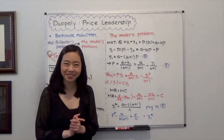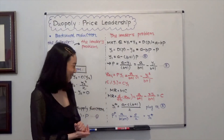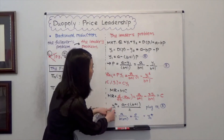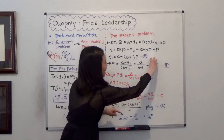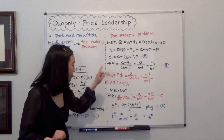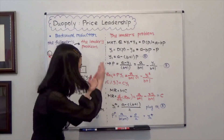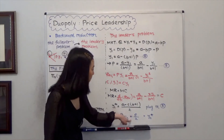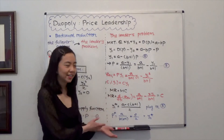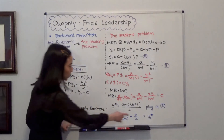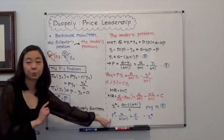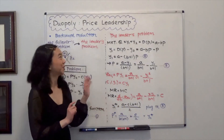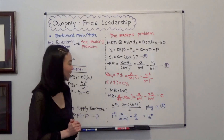To find the optimal price, plug y1* back into Equation 3. You should get p* equal to a divided by [2 times (b plus 1)] plus c over 2. And from Equation 1, y2* is equal to p*, so y2* equals that same expression. That is price leadership. I hope this helps, and I'll see you next time.